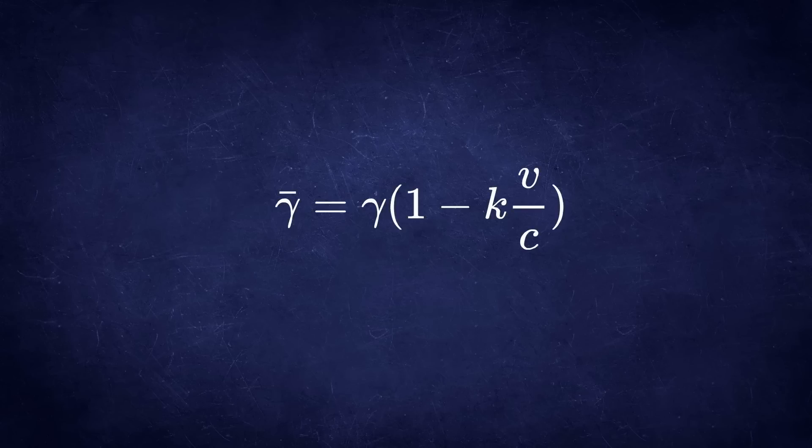So let's do it. The gamma factor for anisotropic speed of light changes a bit. There is this extra factor that depends on the anisotropy factor k and it runs from minus one to one. If k is zero, we have isotropic speed of light.